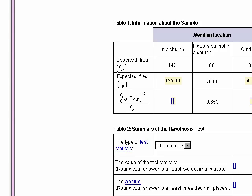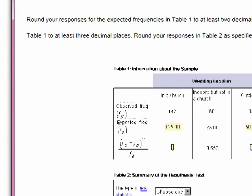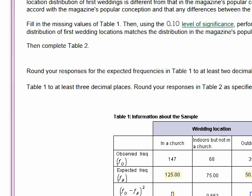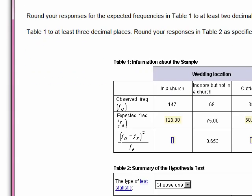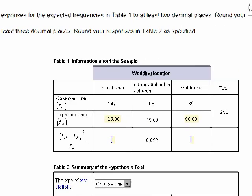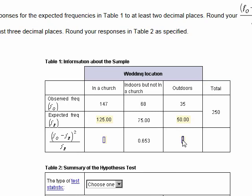When we compute that value, it's 4.5. We're to round to three decimal places, so it would be 4.500.